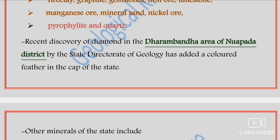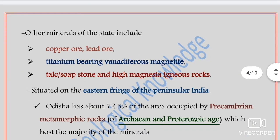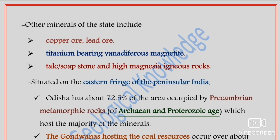Other minerals of the state include copper ore, lead ore, titanium-bearing and vanadiferous magnetite, talc, soapstone, and high-magnesia igneous rock. Situated on the eastern fringe of Peninsular India, Odisha has about 72.5 percent of its area occupied by Precambrian metamorphic rocks. The host rock is very important — knowing in which source rock a particular mineral is found, explored, or mined is essential.